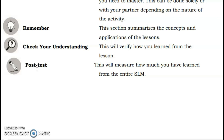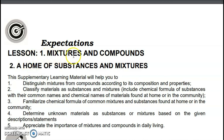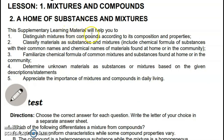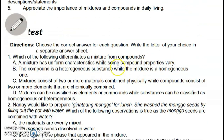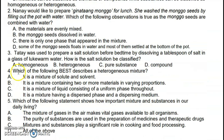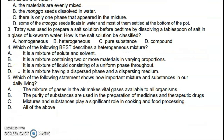Parts of this module: expectations, pretest, looking back, brief introduction, activities, remember, check your understanding, and the post-test — which measures how much you have learned. The expectations cover Lesson One on mixtures and compounds, and Lesson Two on a home of substances and mixtures. This SLM will help you distinguish mixtures from compounds, classify materials, include chemical formulas with common and chemical names, and appreciate the importance of mixtures and compounds in daily living. We start with a five-question pretest — write your answers in your science notebook.